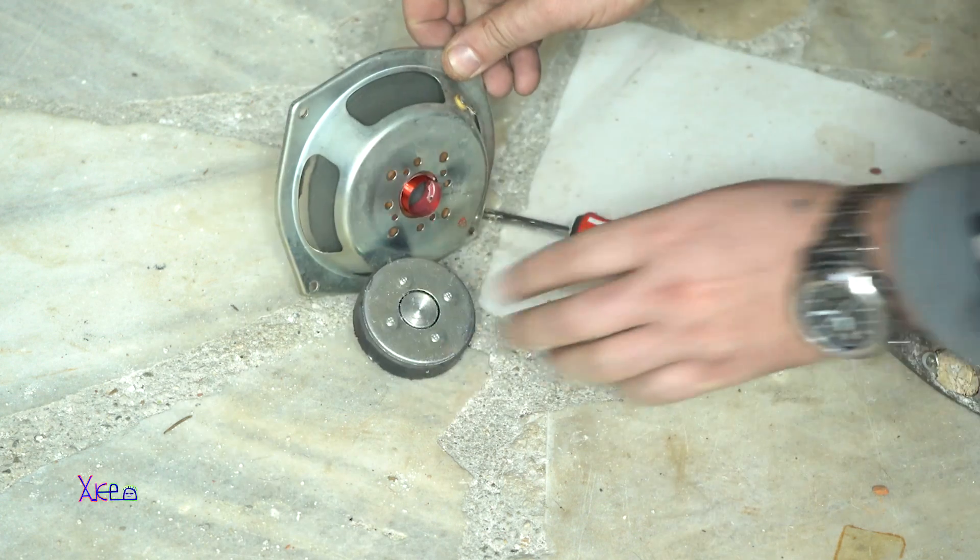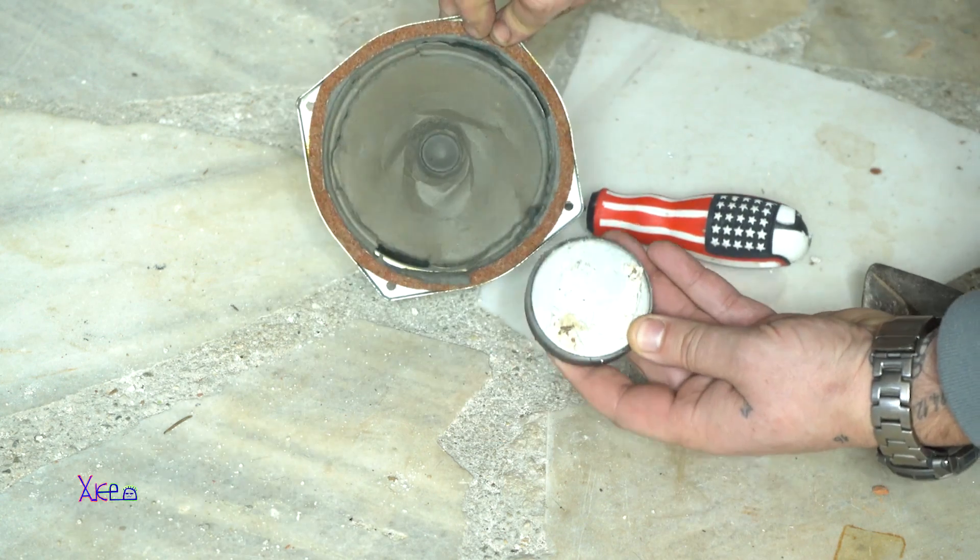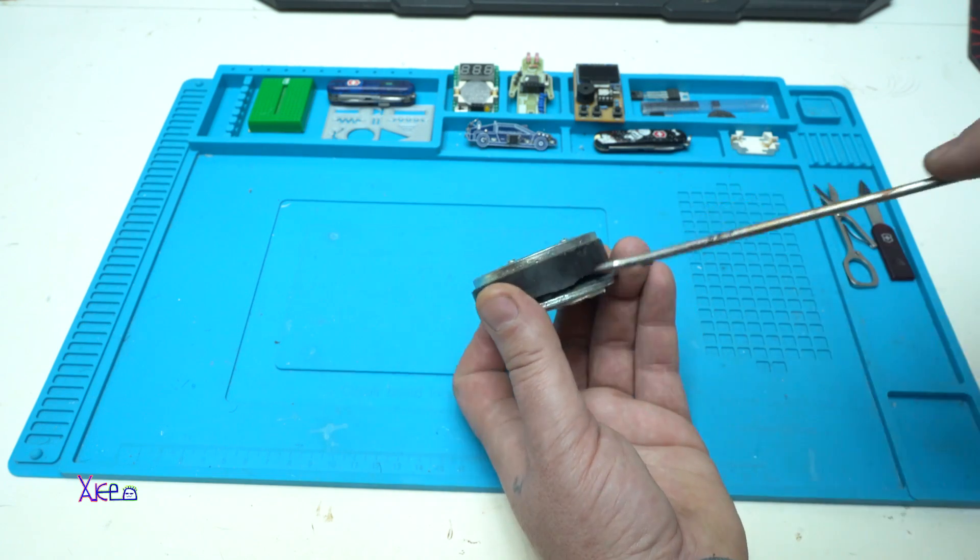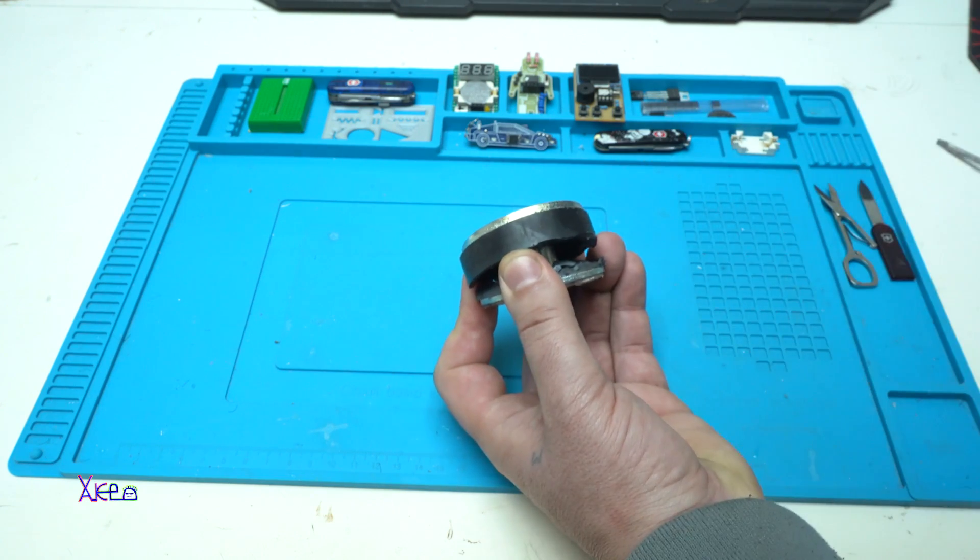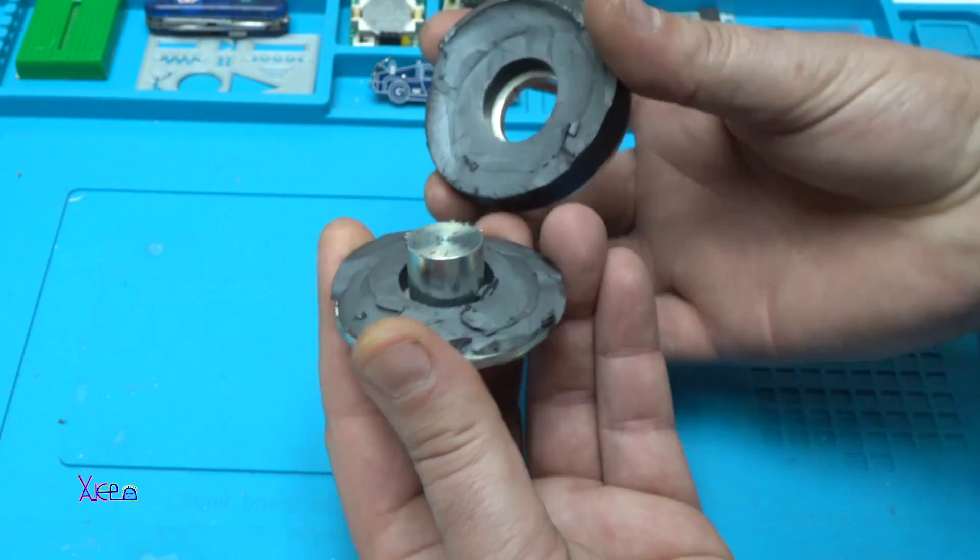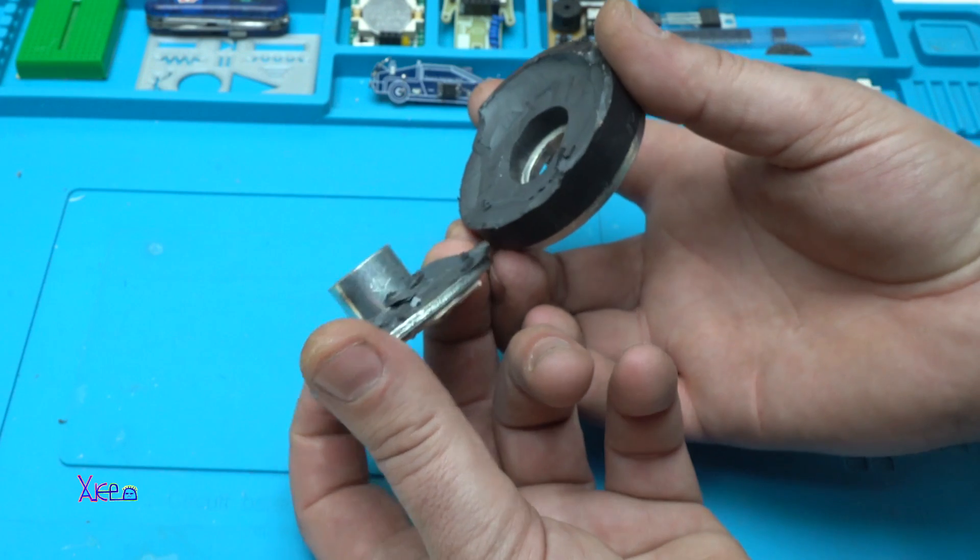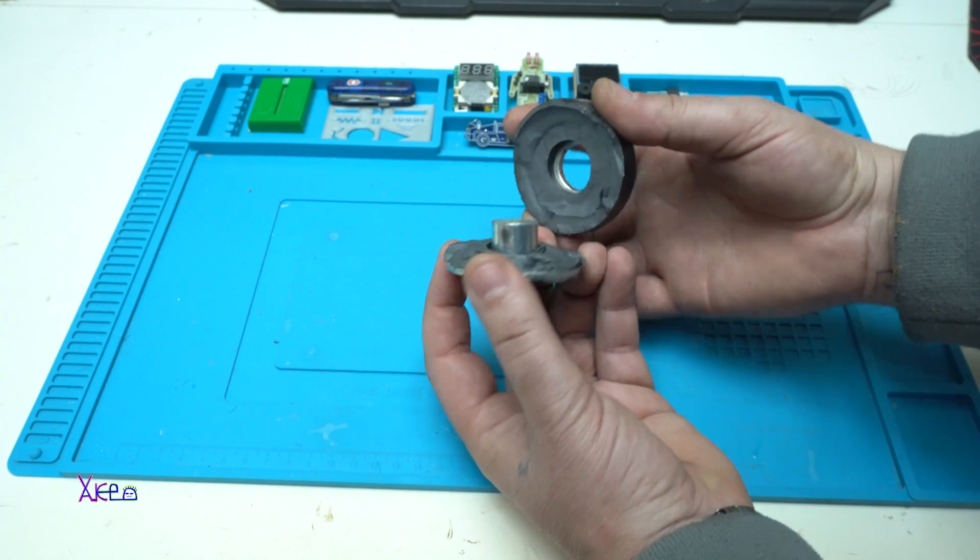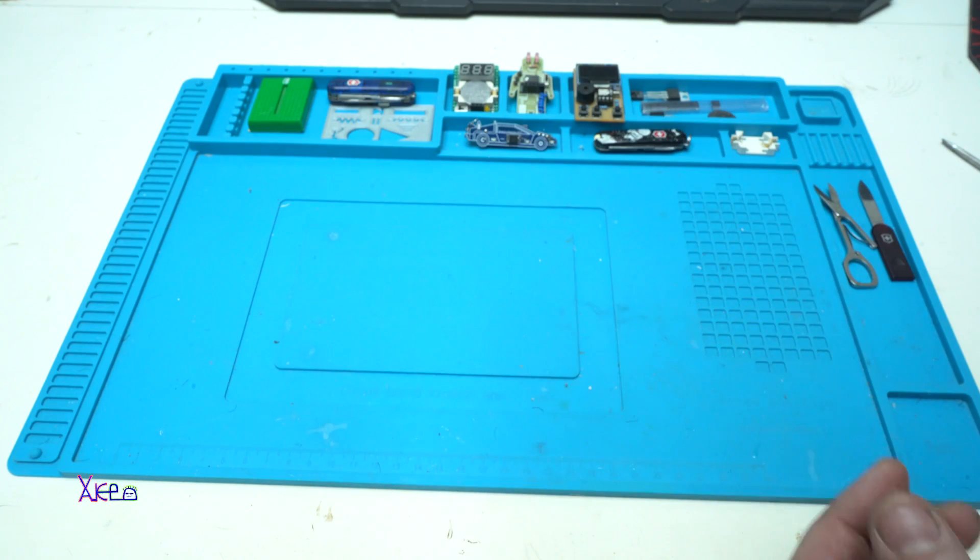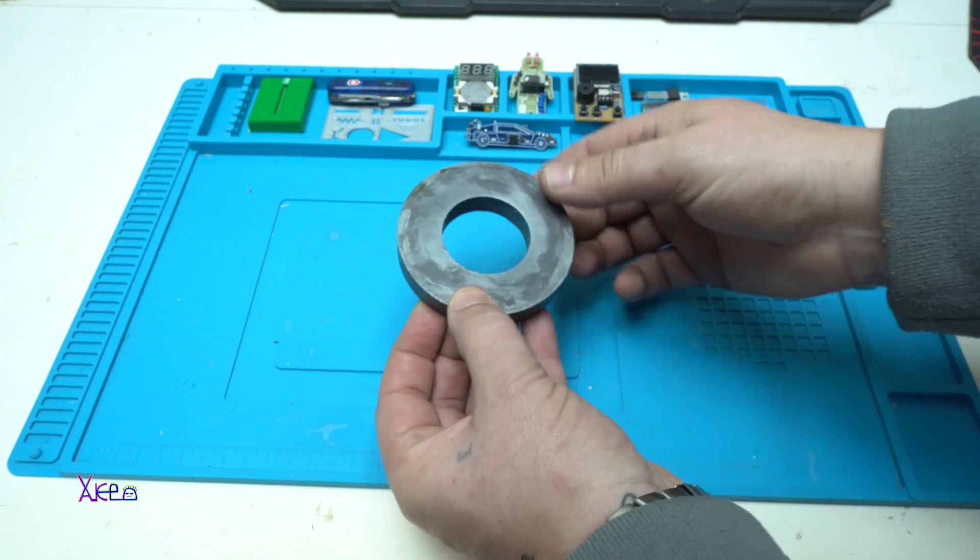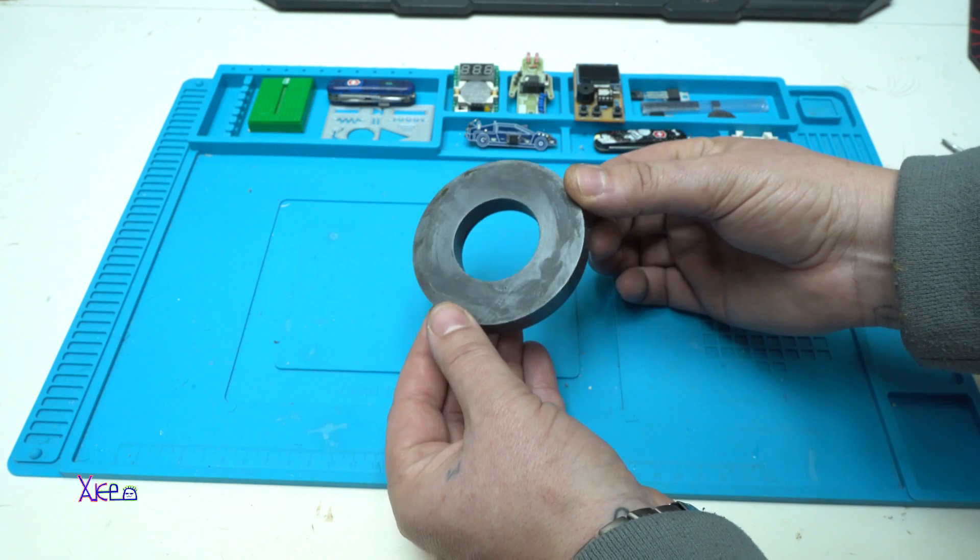To pull out the magnet from the speaker, and believe me it's not easy. Take a look at this. With the first try I broke the magnet, so be careful. But I found a second magnet, a little bigger.